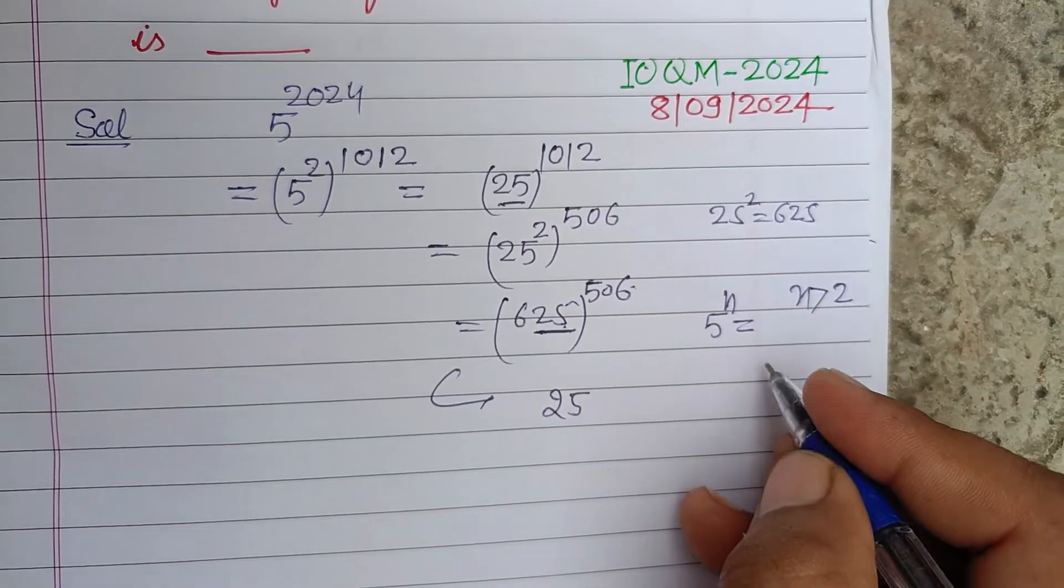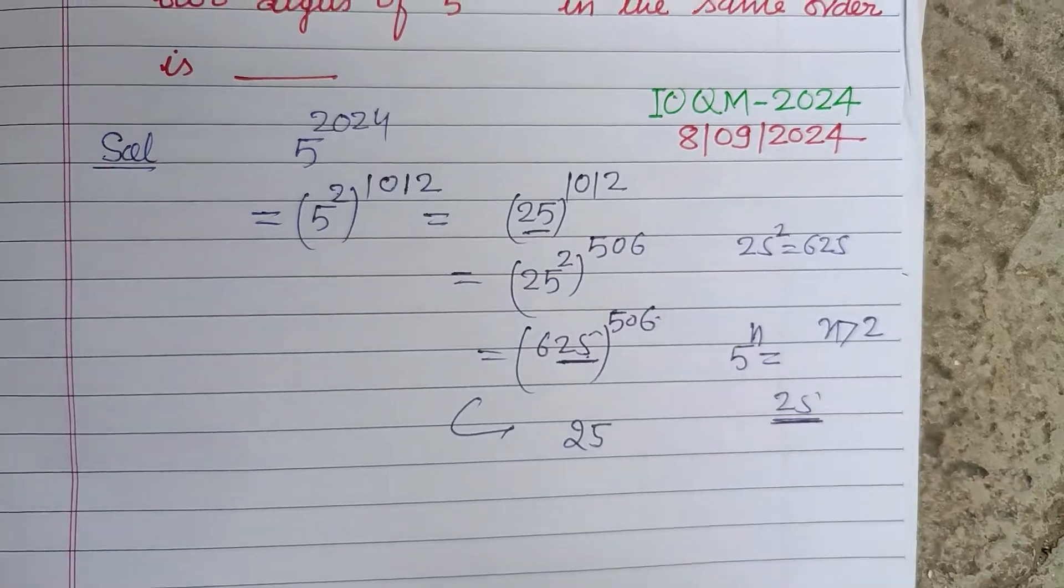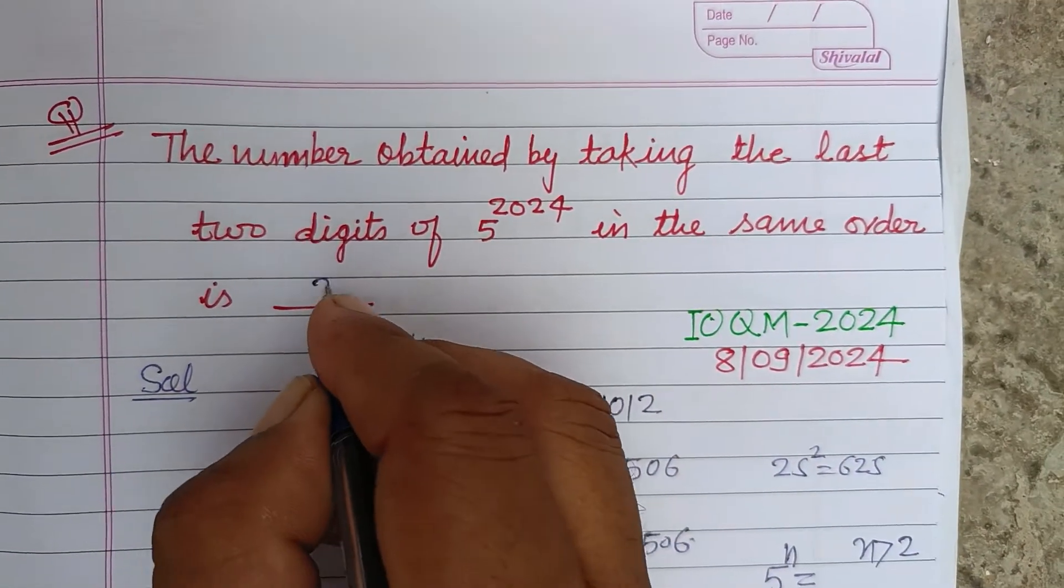If you have 5 to the power n when n is greater than 2, you will get 25 at the last two places. So 25 is the correct answer to this question.